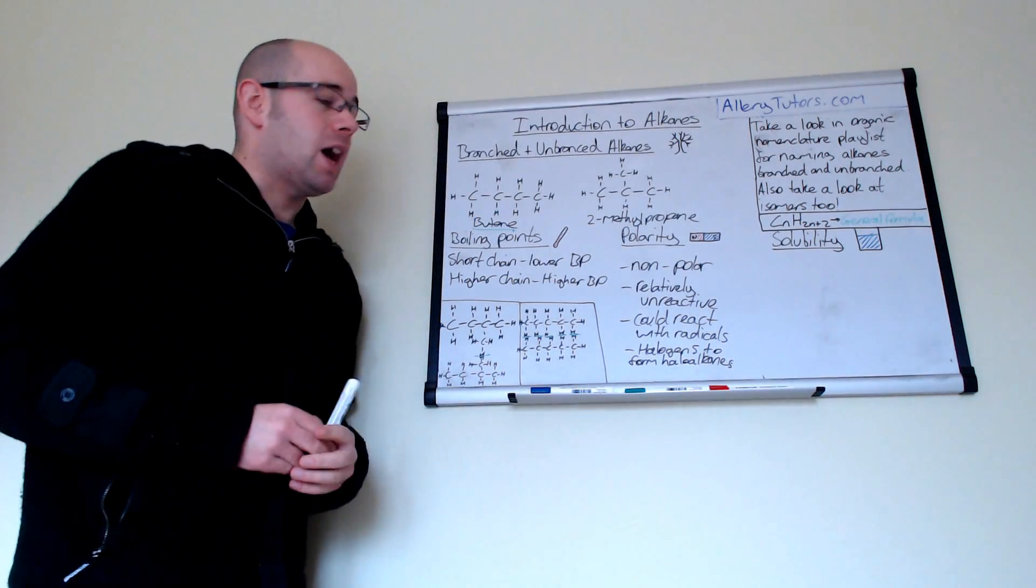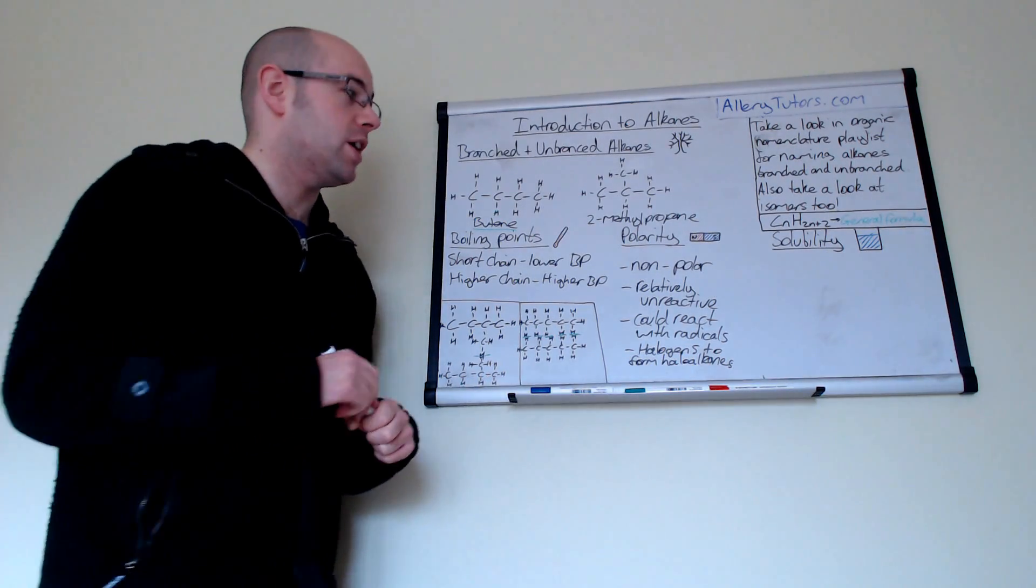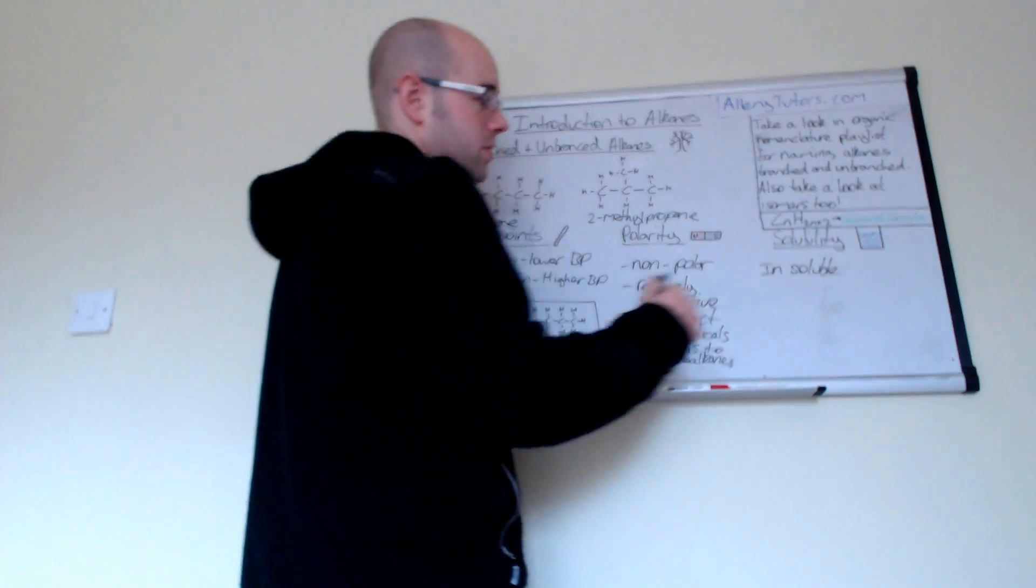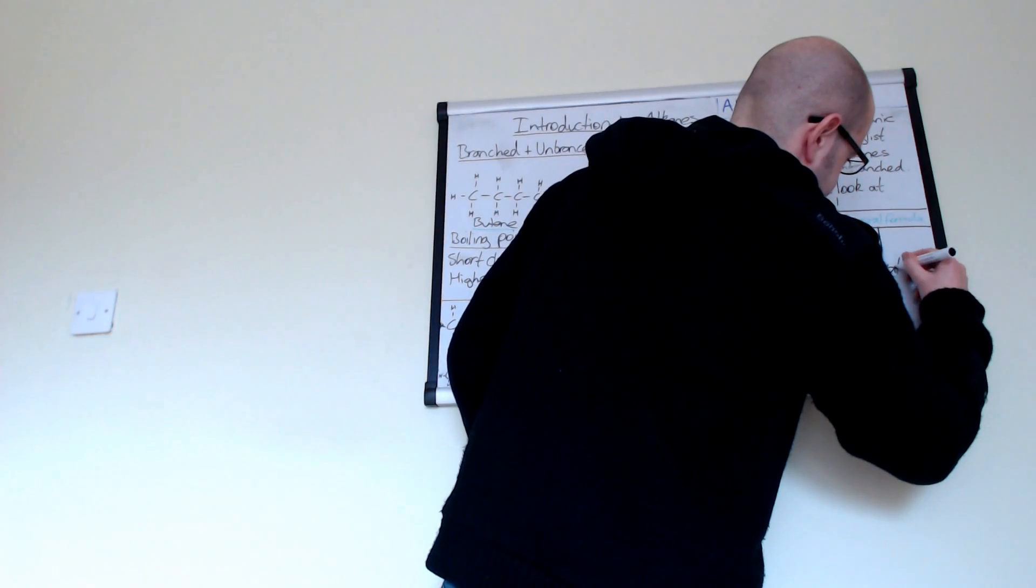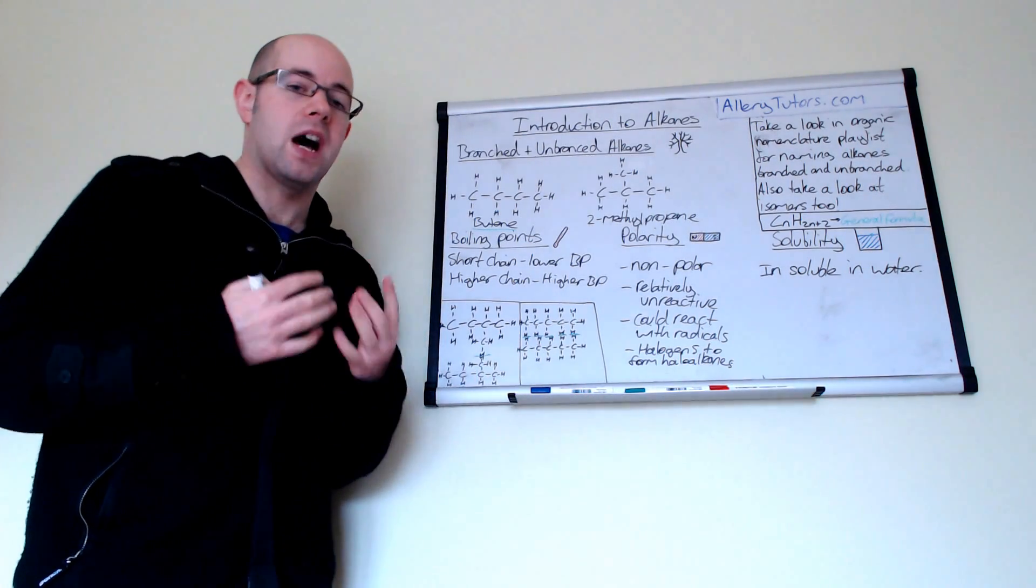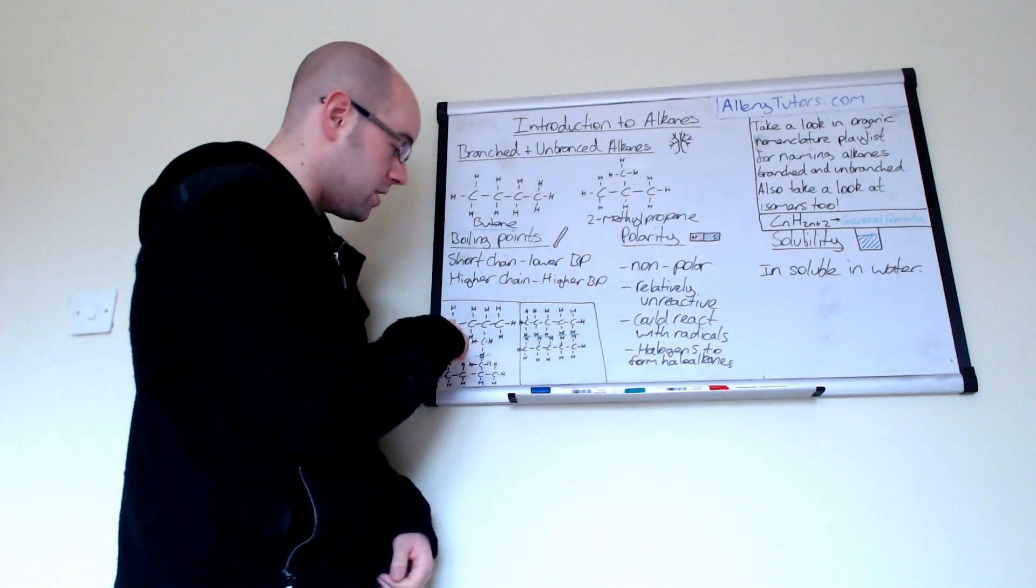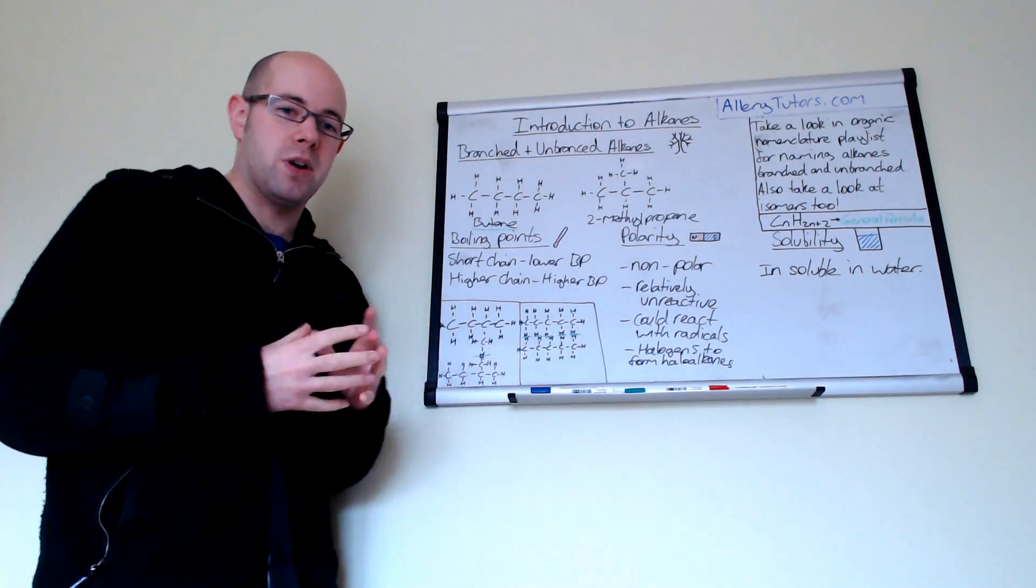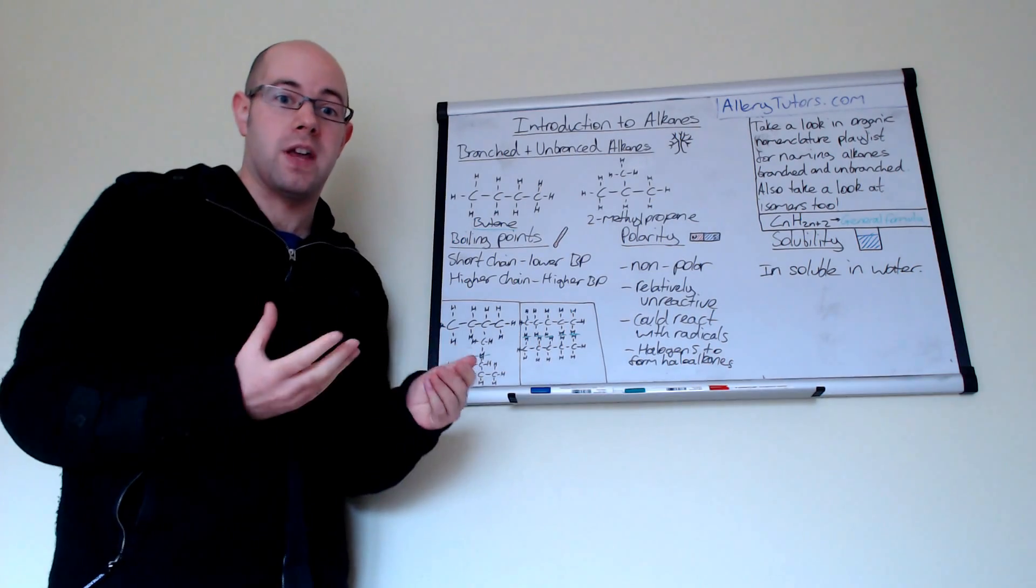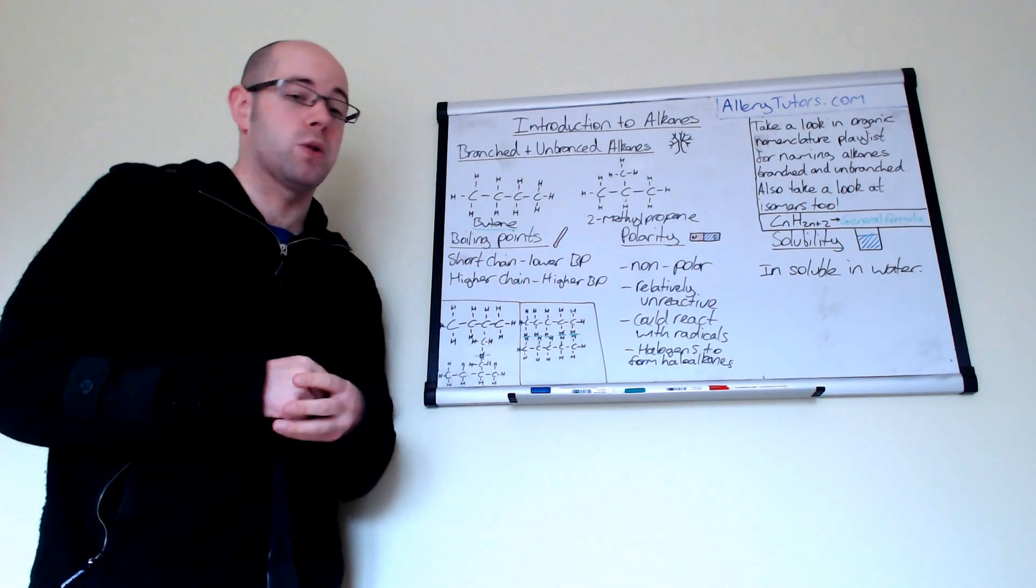In terms of solubility, alkanes are generally not very soluble. Well, in fact, they're virtually insoluble in water. And again, the reason why is because they are not polar themselves. So they're insoluble in water. And the reasons why is because the intermolecular forces between water molecules is hydrogen bonding. So because that bond is actually quite strong, compared to the intermolecular forces between alkanes, the hydrogen bonding is a lot stronger. And therefore, the water doesn't actually interact with your alkanes. And for that reason, they're insoluble. They don't really dissolve. And some alkanes can dissolve in non-polar solvents. But in terms of water, they're insoluble.